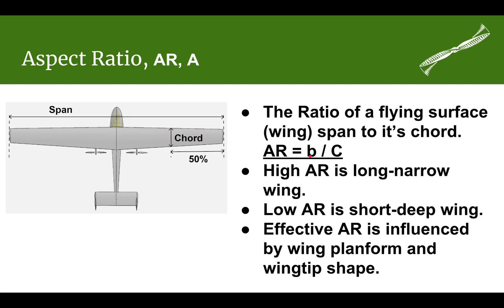Looking at this equation, a high aspect ratio is going to be a long narrow wing — the span B is going to be large and the chord C is going to be small. That's what we're seeing in this picture. This is not an extremely high aspect ratio wing, but it's a higher aspect ratio than you'll see on typical light aircraft.